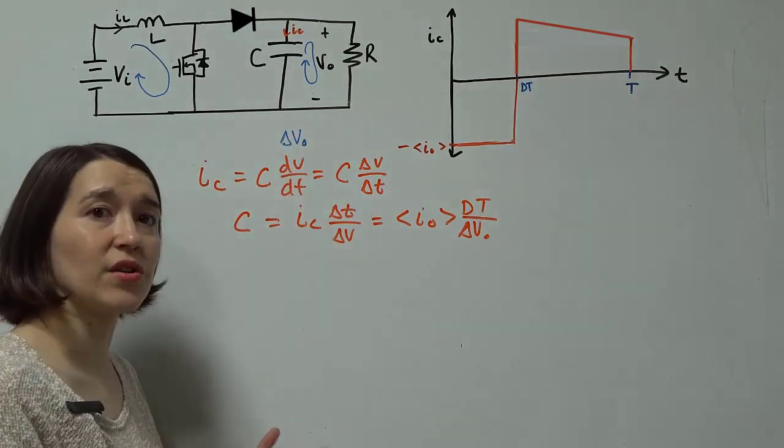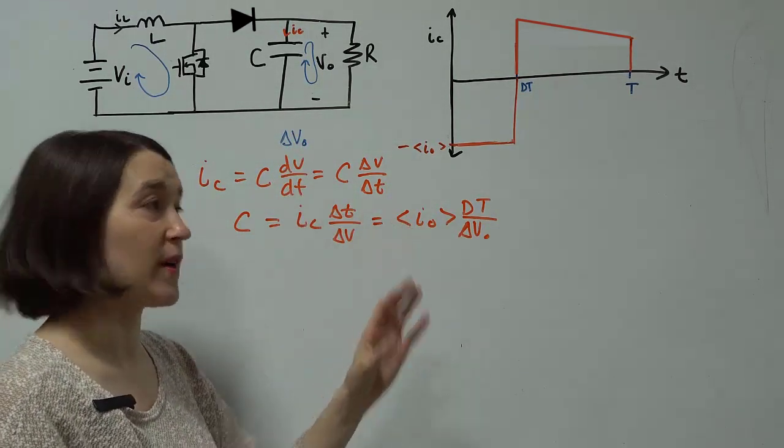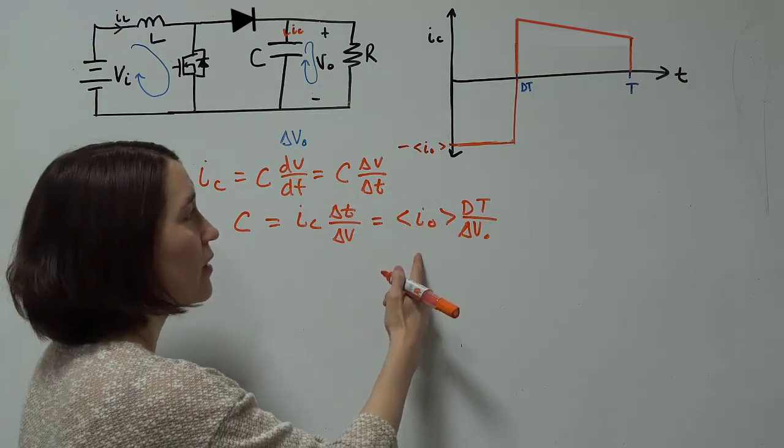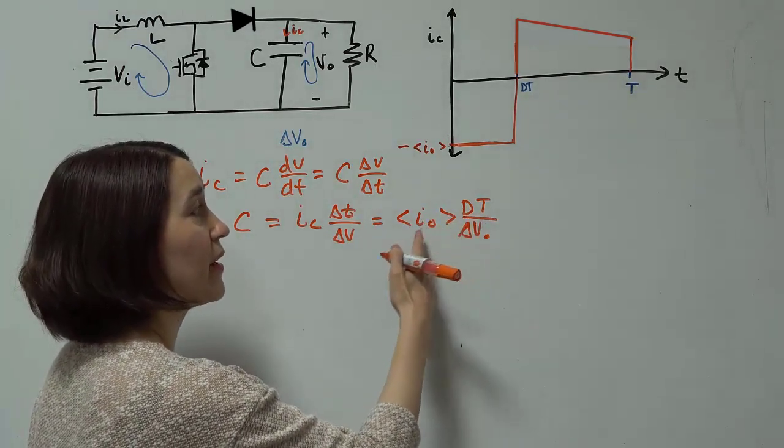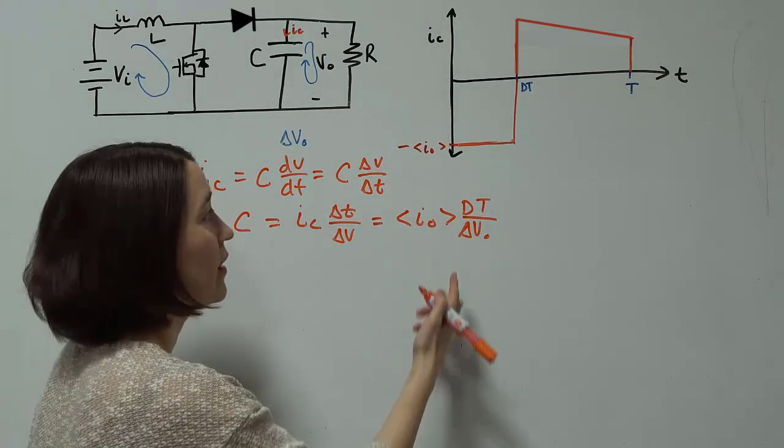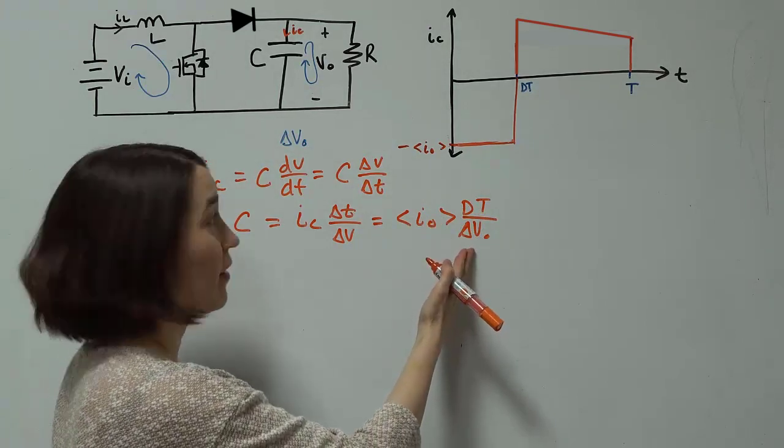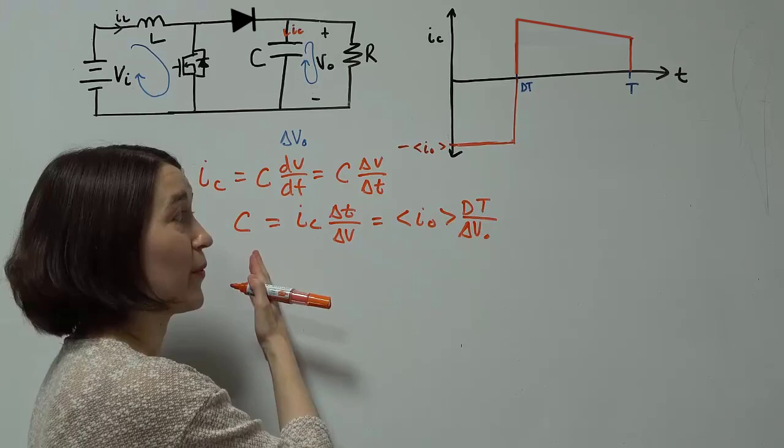And then this will become DT. And then your delta V is going to be your delta V out, which is your value that was given to you or the ripple value that you want. So here you just need to know your duty ratio, your period, and the output current in order to figure out the capacitance that you need to achieve that ripple.